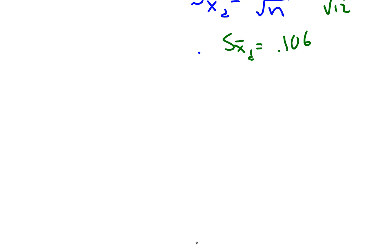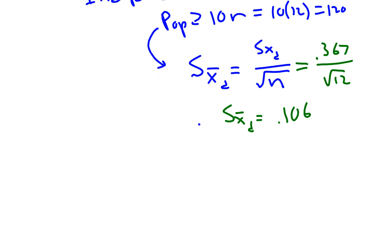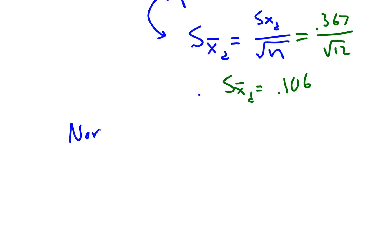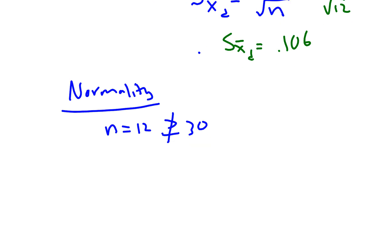Finally, we should check: is it safe to use the t-test? Sometimes this is called the normality check. Are we close to normal in this problem? Well, n is 12, which is not greater than or equal to 30. Otherwise we would just say it's safe to proceed by central limit theorem, which we don't have here. So we have to create a box plot.